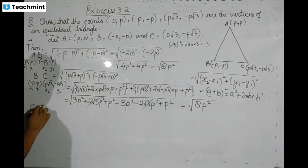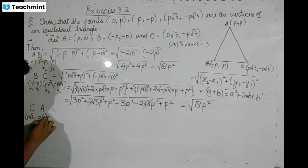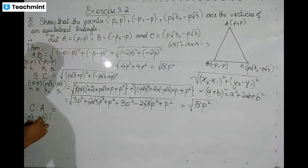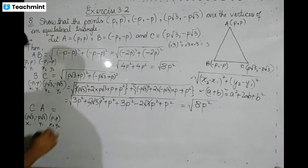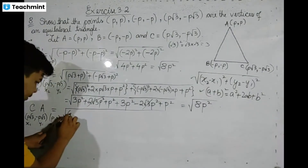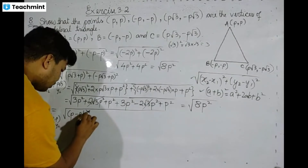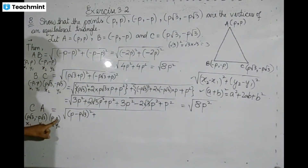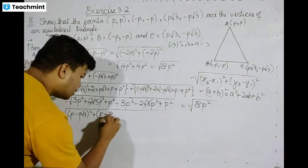Now CA: C coordinates are (p√3, -p√3). A coordinates are (p, p). So x2 is p, x1 is p√3 — that gives (p minus p√3) whole square. Plus y2 is p, y1 is -p√3 — that gives (p plus p√3) whole square, which equals (p root 3) whole square plus p root 3 whole square.